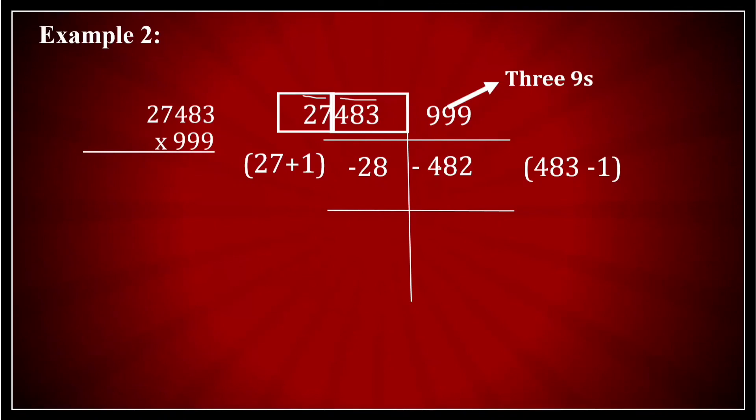13 minus 8 is 5. 7 minus 2 is 5. 4 minus 0 is 4 and 7 and 2 remains as this. So I get my answer as 27455517. So 27483 multiplied by 999 comes out to be 27455517.